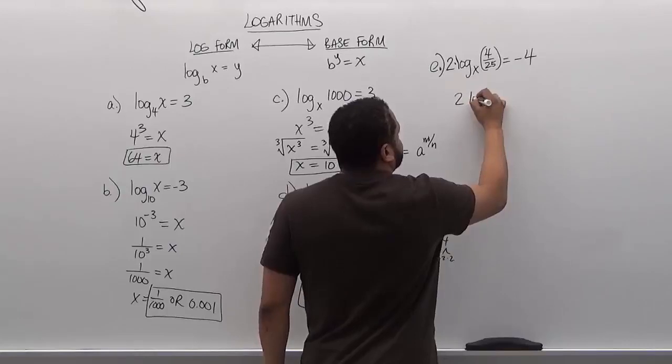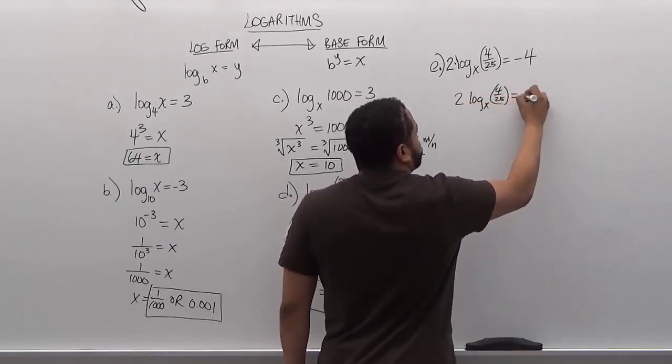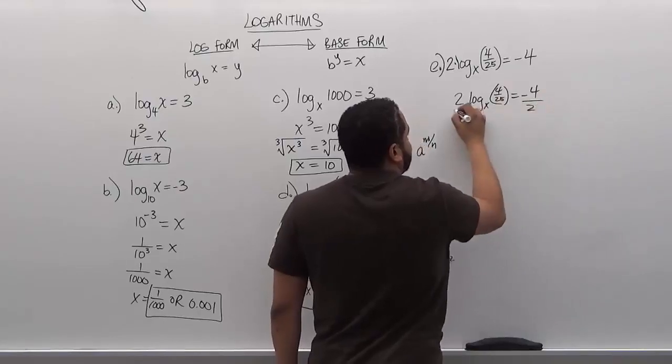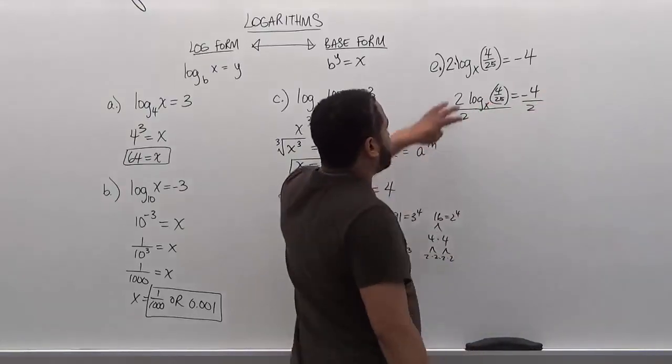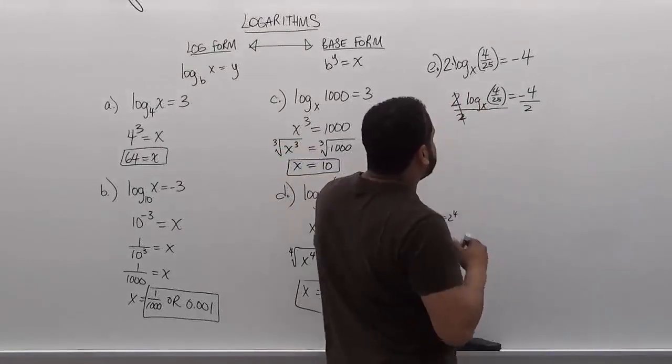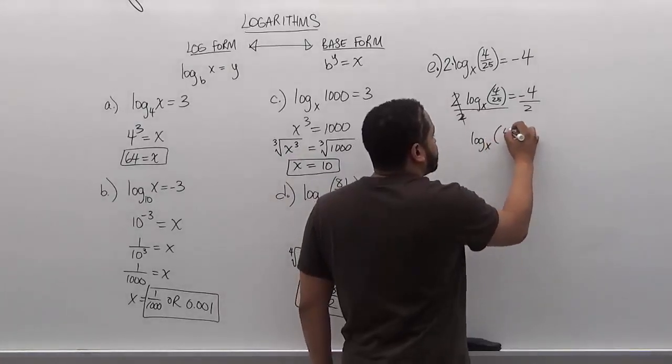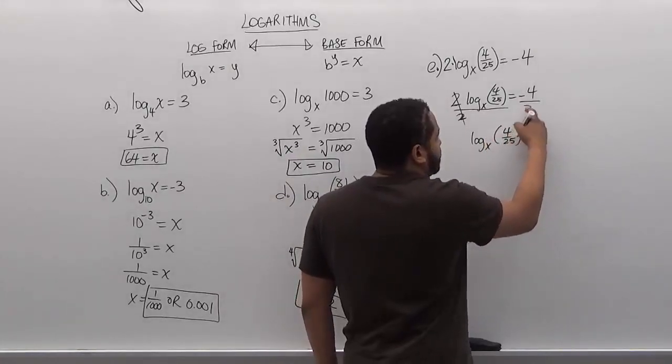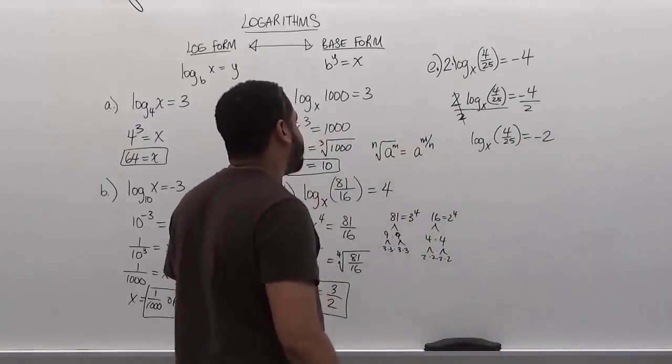To get rid of the 2, we're going to divide both sides of the equation by 2. The only thing that gets affected on the left side is the front number which becomes a 1. So as a result what we're going to get is the log of base x of 4 over 25 is equivalent to negative 2. Now this makes this a lot easier to work out through.